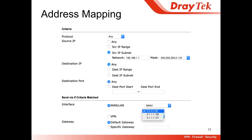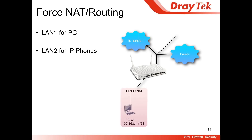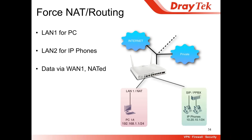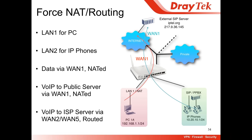For address mapping: if your ISP gives you more than one IP address, you can choose your IP here — I'll demo this part later. For force NAT and force routing: imagine you have two WANs, one is NAT WAN and the other is routing WAN. You have LAN1 for your PCs and LAN2 for your IP phones. You can route LAN1 clients through WAN1 with NAT, and route VoIP to a public server through WAN1 with NAT, while routing VoIP to an ISP or private server through WAN2 with routing. With Route Policy, we can achieve this.